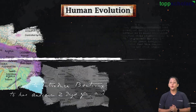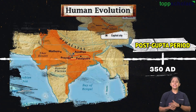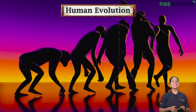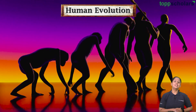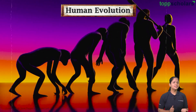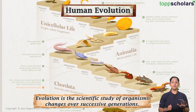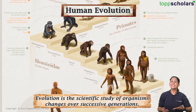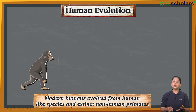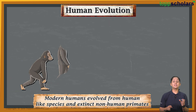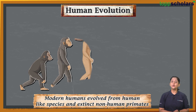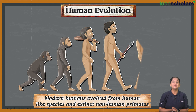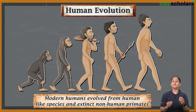Lastly, the post-Gupta period was around 350 AD. Before we go into the details of the series, let us begin with human evolution. Evolution is a scientific study of organism changes over successive generations.